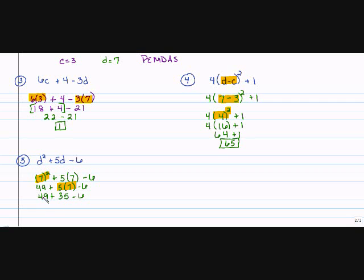Moving left to right, I'm going to solve 49 plus 35 first. And 49 plus 35 is 84 minus 6. And 84 minus 6 is 78.